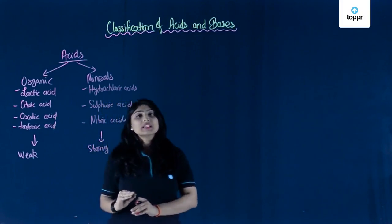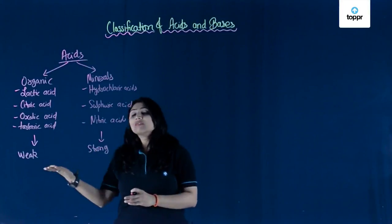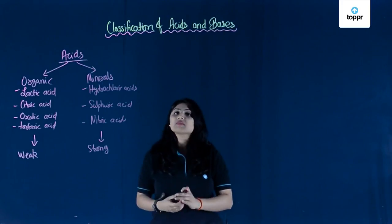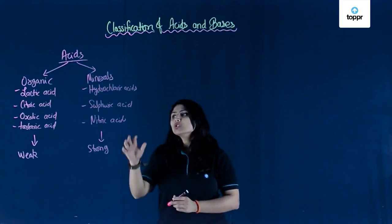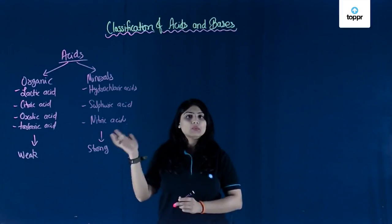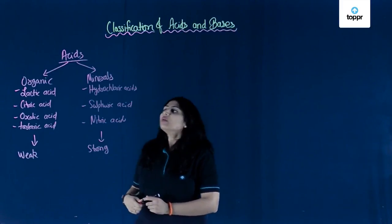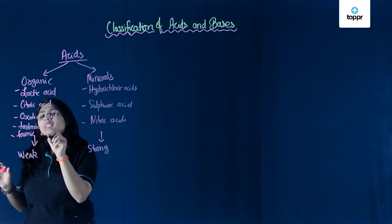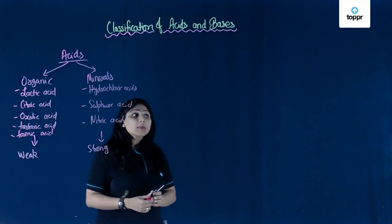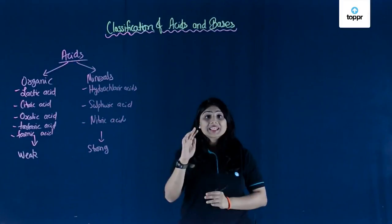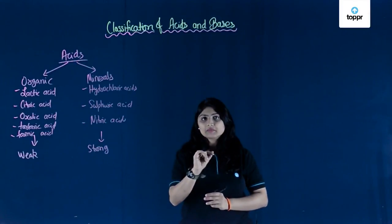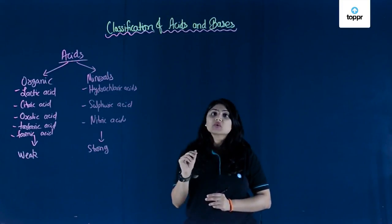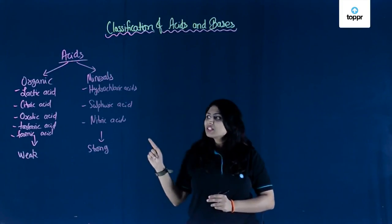Organic acids are usually weak and we can even consume them, while mineral acids are very strong and very corrosive — they cannot be used for domestic purposes and are usually used in industries and laboratories. Organic acids also include formic acid, which is the acid present in bee stings and ant stings. Ants don't actually bite — they throw formic acid on us for self-defense.